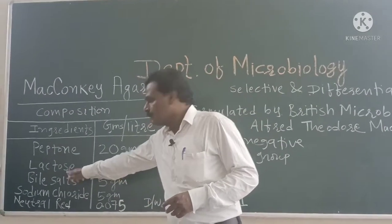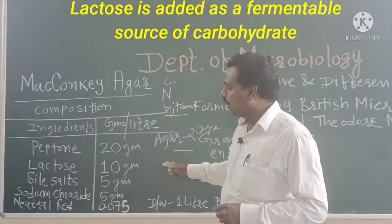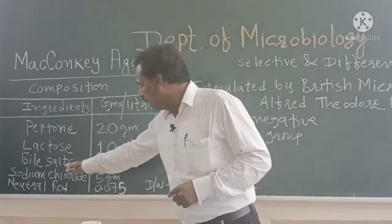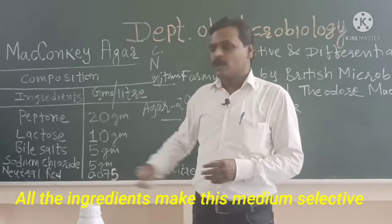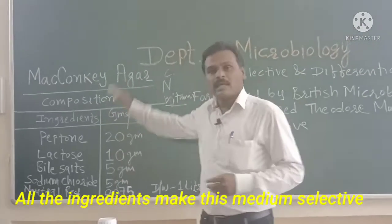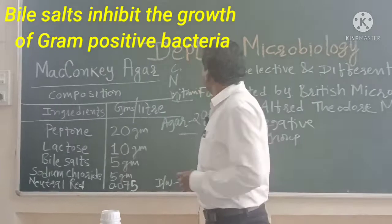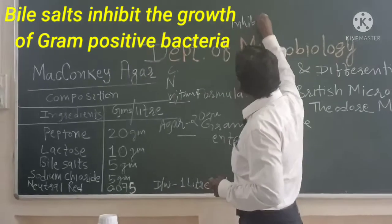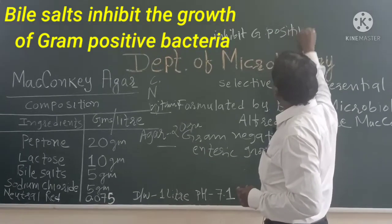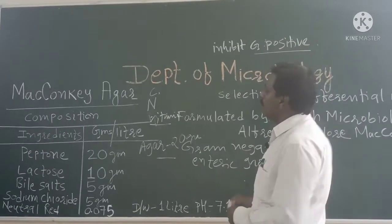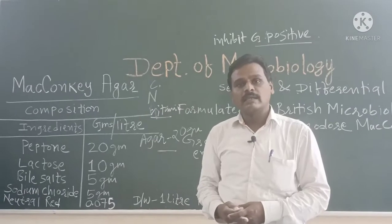Another component is lactose, which is added into the medium as a fermentable source of carbohydrate. Another most important ingredient is bile salt, added at 5 grams. These ingredients make the medium selective and differential. Bile salt inhibits the growth of most species of gram-positive bacteria while allowing the growth of gram-negative bacteria. That is why it is a selective medium.